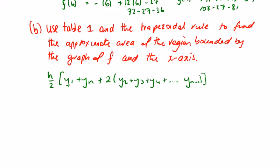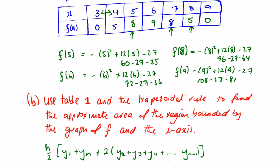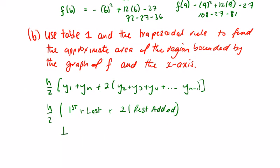An easier way to remember this: h over 2, times the first one plus the last one plus twice the rest of them together. So h, we know, is the gap between the x values. In this case it's 1, so we've 1 over 2.